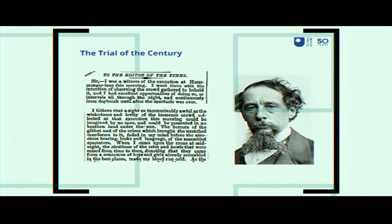Maria and Frederick were executed by William Calcraft, who was at the time the official executioner of the City of London, midway through a career which would see him execute in excess of 450 people. Newspapers were a bit outraged that many apparently respectable persons had booked rooms to watch the double execution. Among them was a man who rented a room with some friends to watch the execution, and was so horrified by what he saw that he wrote a letter to The Times the next morning. In his letter he claimed he had attended merely to observe the crowd for journalistic reasons — the letter writer, who some of you might have recognised, was Charles Dickens.